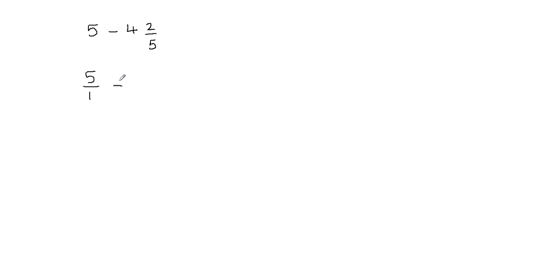Now we're going to put the minus sign in between and convert this mixed fraction into an improper fraction. I'm going to multiply my whole number with the fraction's denominator: 4 times 5 gives me 20, then we add that to the numerator. 20 plus 2 gives me 22, so I put 22 here and the denominator stays as 5.